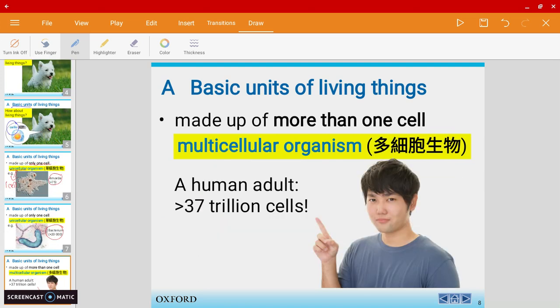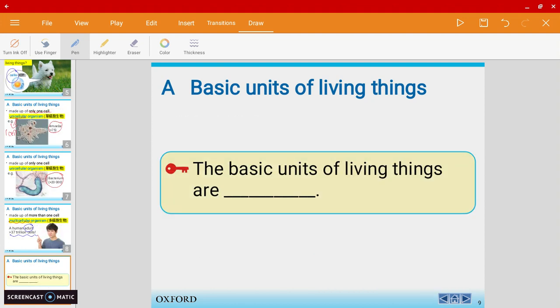Of course, there are examples of more than one cell. We call them multicellular organisms. One very common example is us humans. Adults have more than 37 trillion cells. That's a huge number. So the basic units of living things are cells.